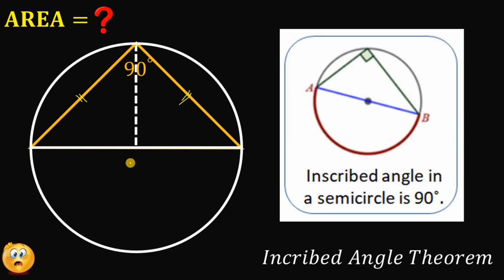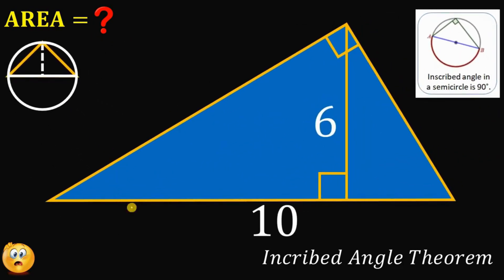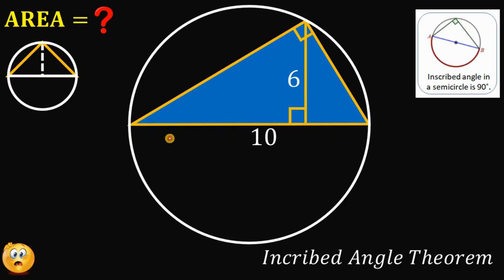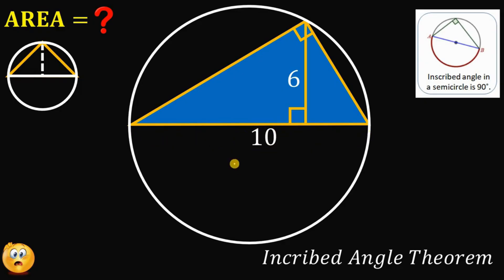This concept is very important. Keep in mind that the maximum height of a right triangle inscribed in a circle must equal half of the diameter. Going back to our question: we place this right triangle inside the circle, so the diameter of the circle equals the hypotenuse of the right triangle, which is 10 units. Therefore, the maximum height of this right triangle must be half of the diameter, which is 5 units.